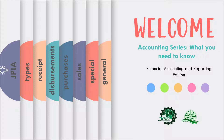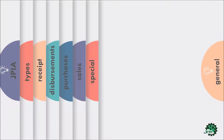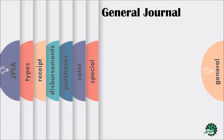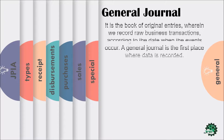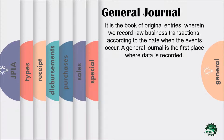First, we will tackle if the company opts to use the general journal only. The general journal is the book of original entries, wherein we record raw business transactions according to the date when the events occur. A general journal is the first place where the data is recorded.